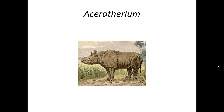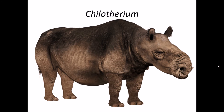Acerotherium belongs to the family of Rhinoceros, so we put them in the family Rhinocerotidae. This family has members like Rhinoceros. Celotherium is also a relative of Rhinoceros, so we put them in the family Rhinocerotidae as well.